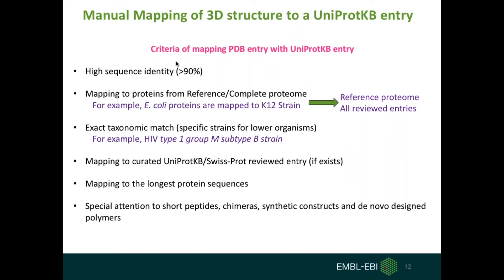Mapping is preferred to a reference proteome. For example, E. coli proteins are mapped to the K12 strain — K12 strain of E. coli is a reference proteome, and for K12 we have all the proteins reviewed manually in the UniProt database. We also prefer mapping to the exact taxonomy for lower organisms such as bacteria and viruses. For example, if a structure has been solved from HIV virus type 1 group M subtype B strain, we will map it to the UniProt entry from that exact same strain.